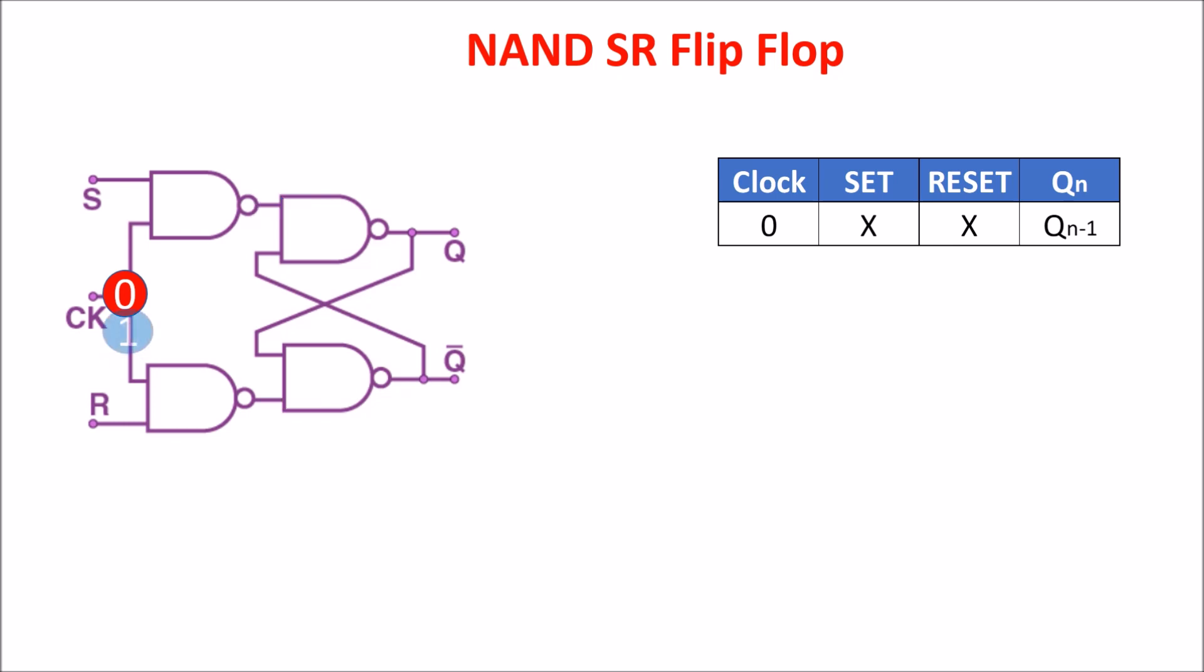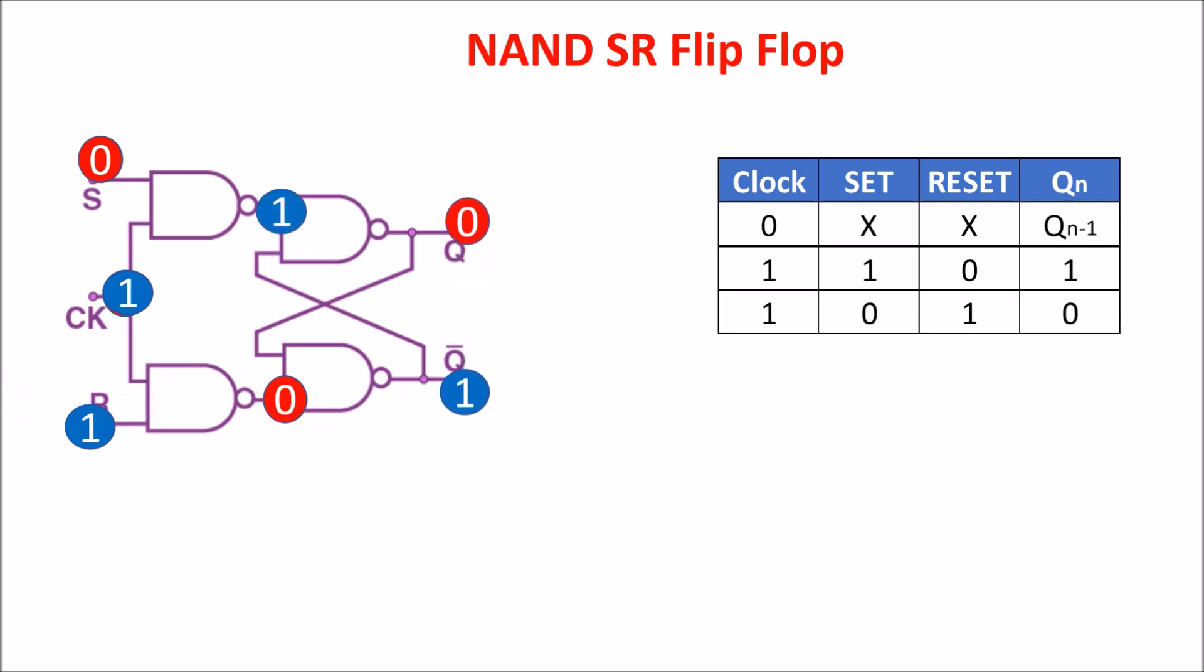When the clock is 1, if set is 1 and reset is 0, we have this situation. And if set is 0 and reset is 1, we have this other situation. So when clock is 1, Q takes the value of set and Q bar the value of reset. If both set and reset are 0, it is easy to see that we are again in the memory situation of the latch keeping Q at the previous value. And last, if the inputs are both 1, we have 0s in the input of SR latch and we are in the invalid situation.